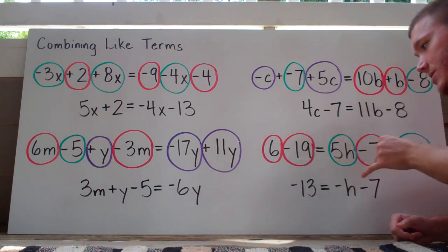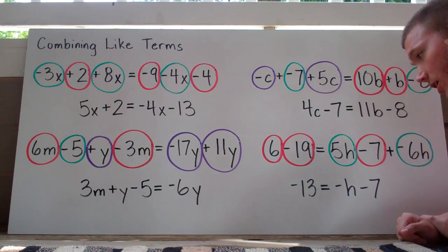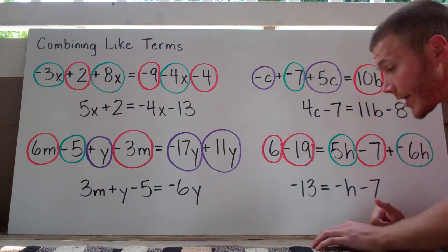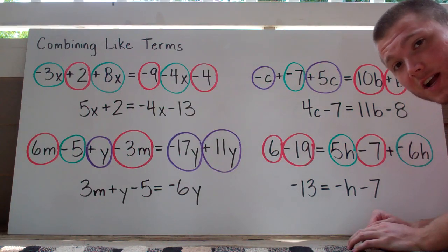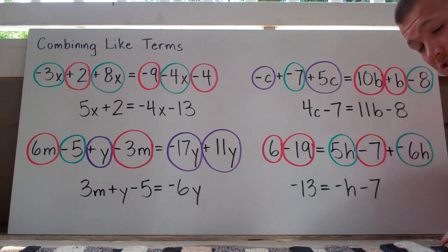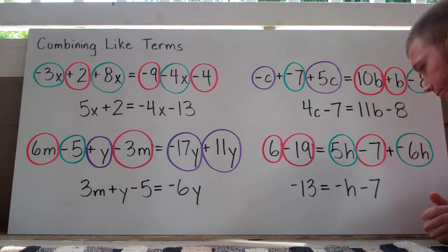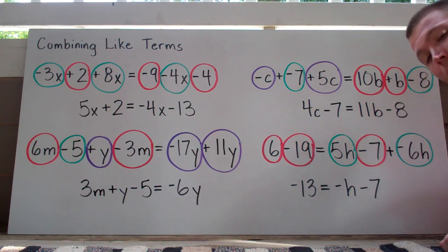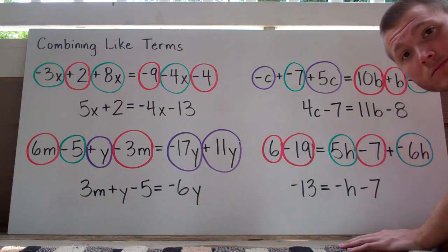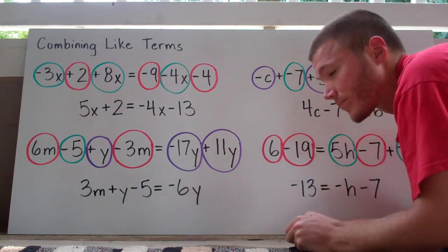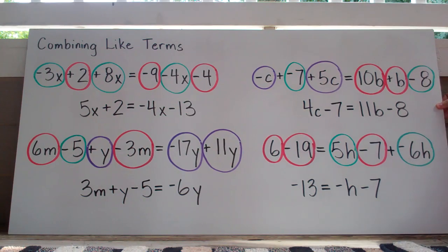Last combining like terms example: 6 minus 19 equals 5h minus 7 plus negative 6h. On the left, both terms are integers, so I combine: 6 minus 19 equals negative 13. On the right, positive 5h and negative 6h are like terms: 5h minus 6h gives us negative 1h, or just negative h. The minus 7 drops down unchanged, since there's no other integer on that right side to combine with. That's how you combine like terms.